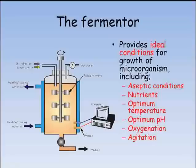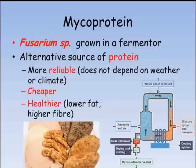This fermenter setup can be used to grow bacteria and yeast that have had genes added to them so they make products that are useful to us. Another way of using fermenters is growing up microorganisms where the microbe itself is useful. One example is the fungus Fusarium, which can be eaten as an alternative source of protein to meat. This is known as mycoprotein because it comes from a fungus.